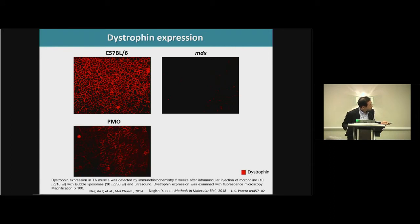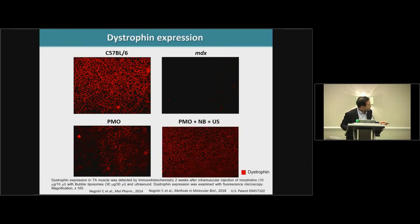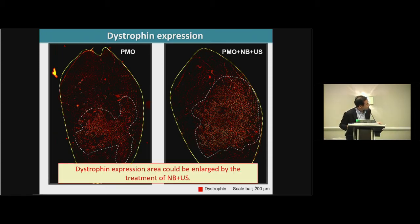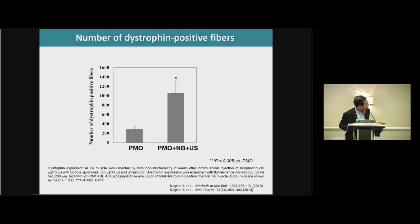The next slide shows dystrophin protein expression by immunochemistry. As you can see, in the case of nanobubble and ultrasound exposure, significantly higher protein expression can be seen. At lower magnification, an enlarged expressed area could also be observed. This is the calculated data.